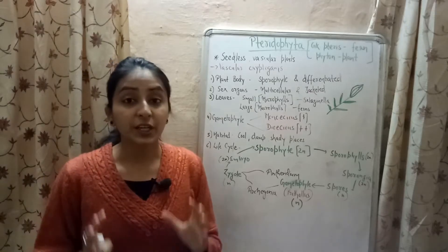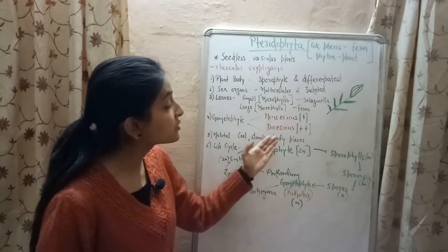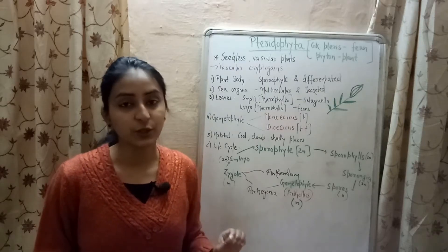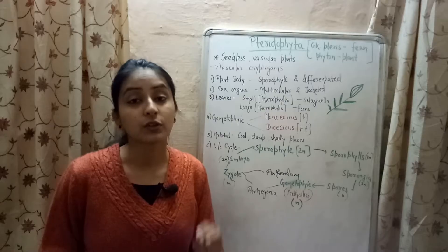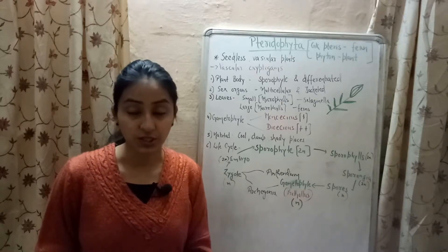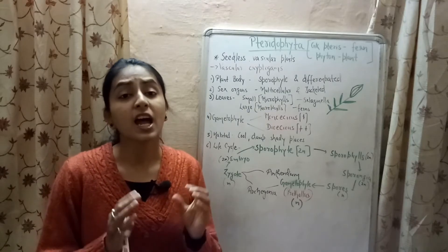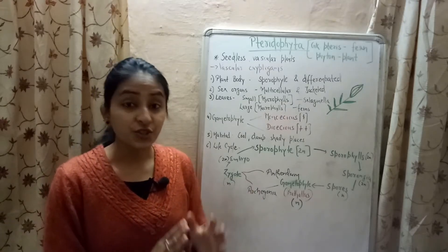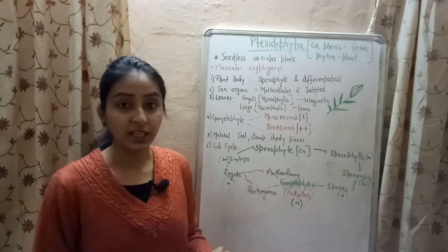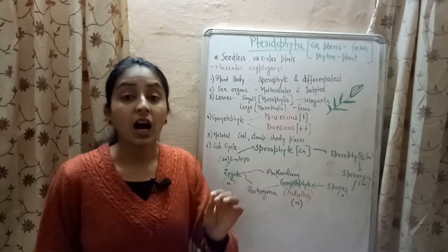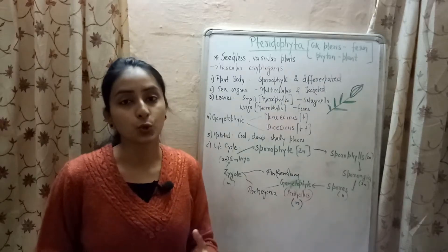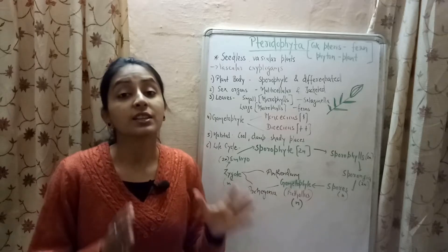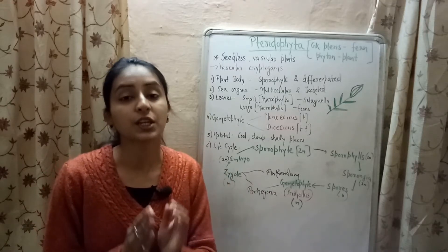Pteridophytes are found in cool, damp, shady places — cold places where you find favorable conditions. They also require water for the process of fertilization. Because of these high requirements, the population of pteridophytes is restricted to limited areas. If even one condition is missing, their growth becomes difficult.